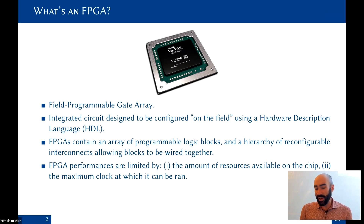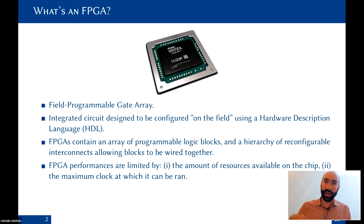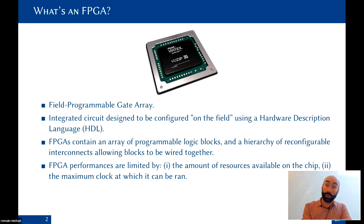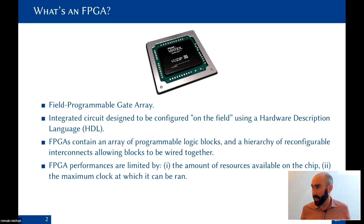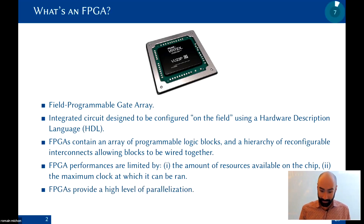FPGA performance is limited mostly by two factors: the amount of physical resources on the chip — a limited number of multipliers and logic gates — and the maximum clock speed. The clock speed issue is similar to CPUs and microcontrollers, but the physical resource limit is very specific to FPGAs.